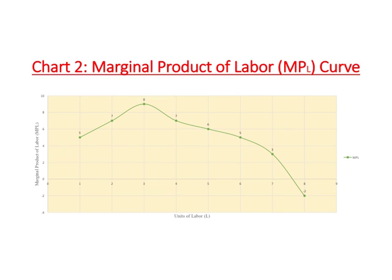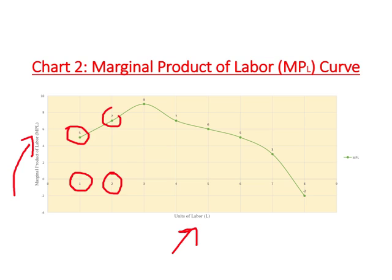Based on table 2, we can plot these points. On the vertical axis we have marginal product of labor (MPL), and on the horizontal axis we have units of labor. The productivity of the first worker is 5, the second worker is 7, the third worker is 9, and so on. The productivity of the eighth worker is negative 2. When we join all these points, this curve is called the MPL curve, showing the relationship between marginal product of labor and units of labor.